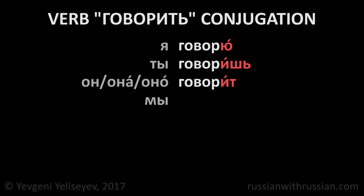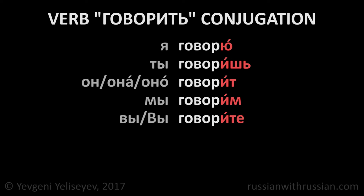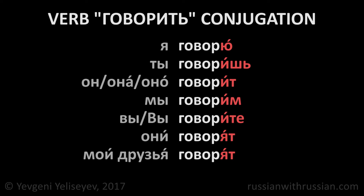In the first person plural Мы, we use the ending ИМ. Мы говорим — we speak. In the second person plural Вы, the ending is ИТЕ. Вы говорите — you speak. The same is true for the polite form вы. And in the third person plural, we use the ending ЯТ. Они говорят — they speak. Мои друзья говорят — my friends speak.